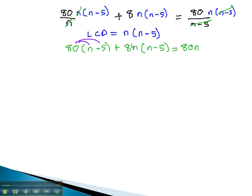Continuing to solve, we'll distribute through the parentheses, giving us 80n minus 400 plus 8n squared minus 40n equals 80n.